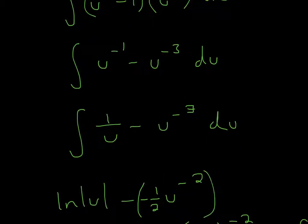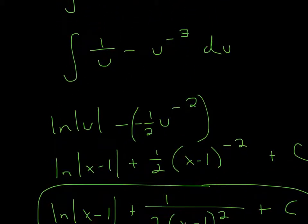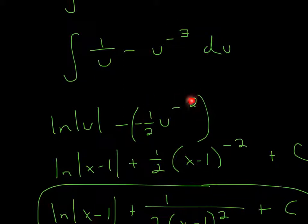After that, we can simplify. u to the negative 1 can be represented as 1 over u, and these two terms are exactly the same. Now we can do our actual integration. You have to memorize this: the integral of 1 over u is ln u. For the other term, we use the power rule — add 1 to the exponent, so it becomes negative 2, and multiply by 1 over the new exponent, which is 1 over negative 2.